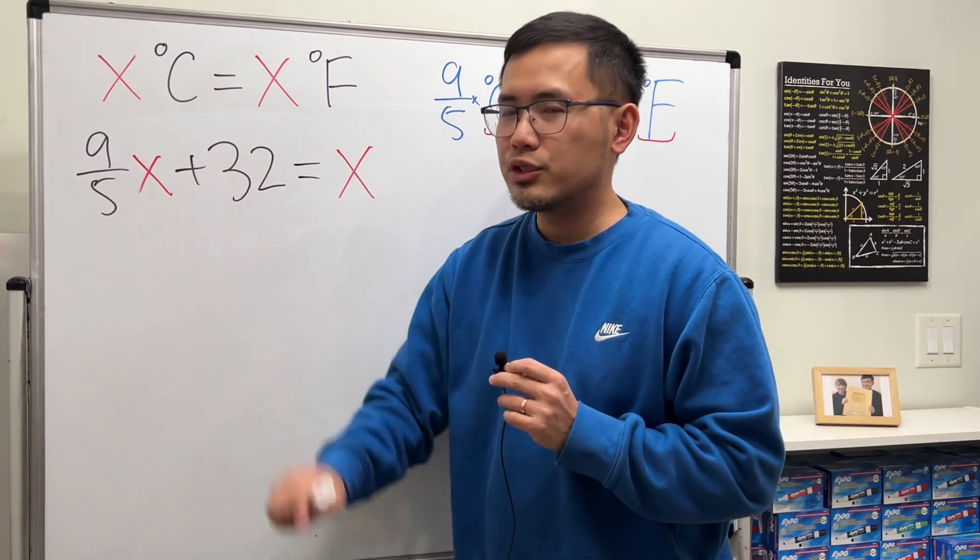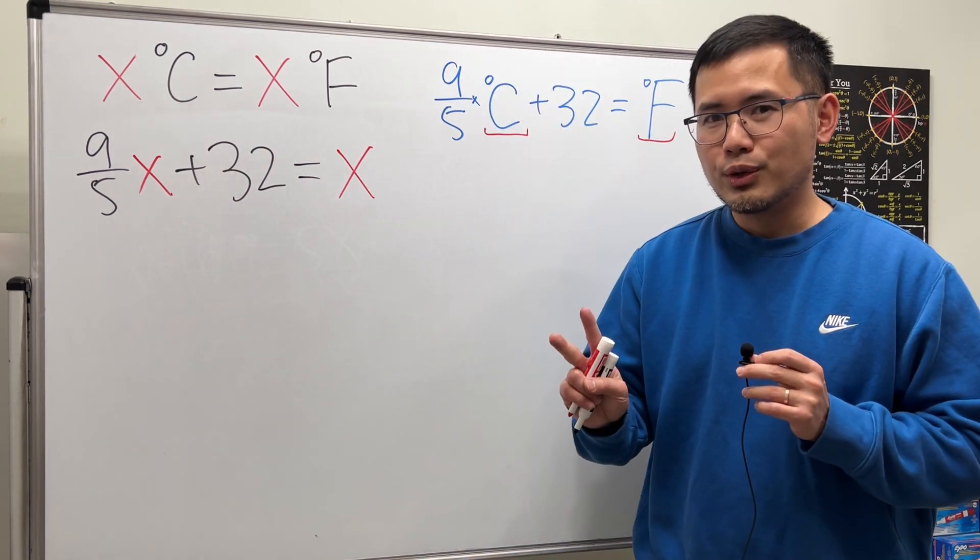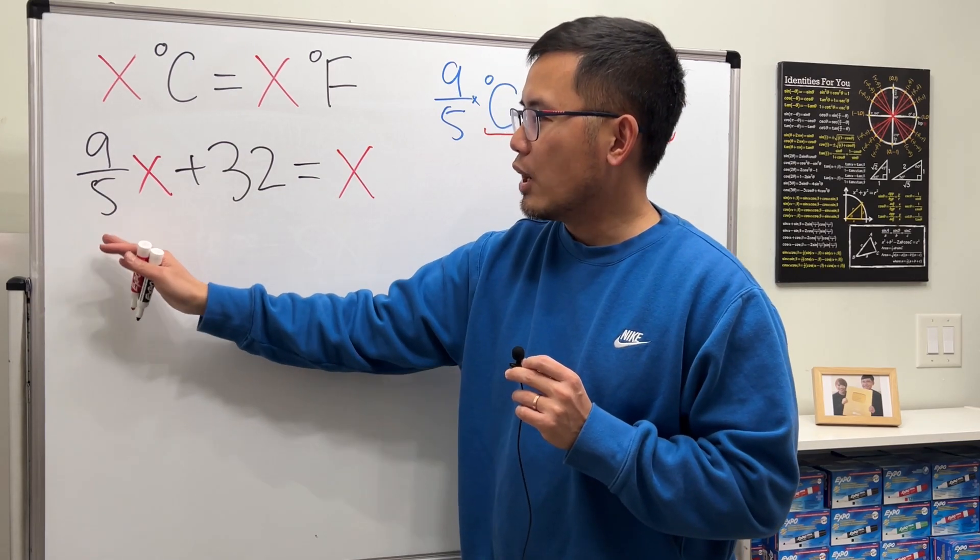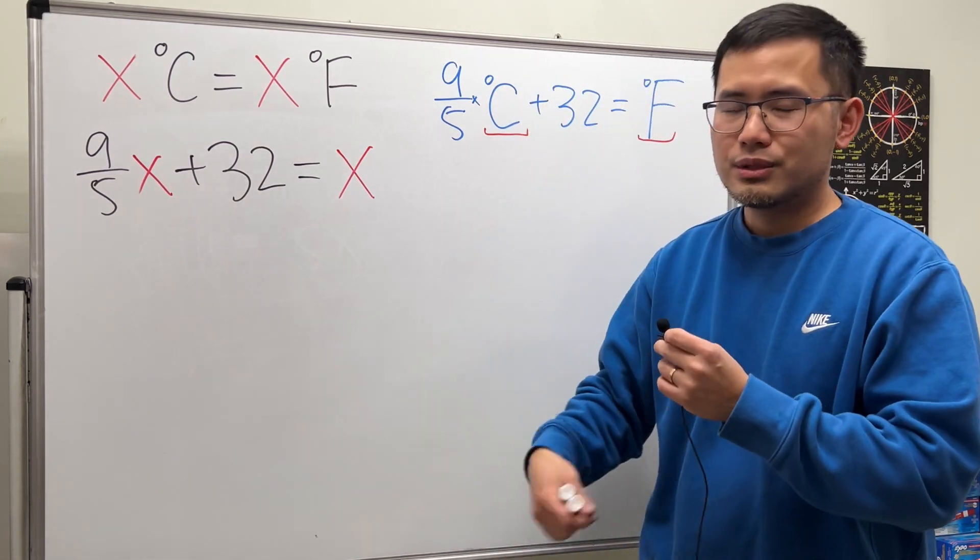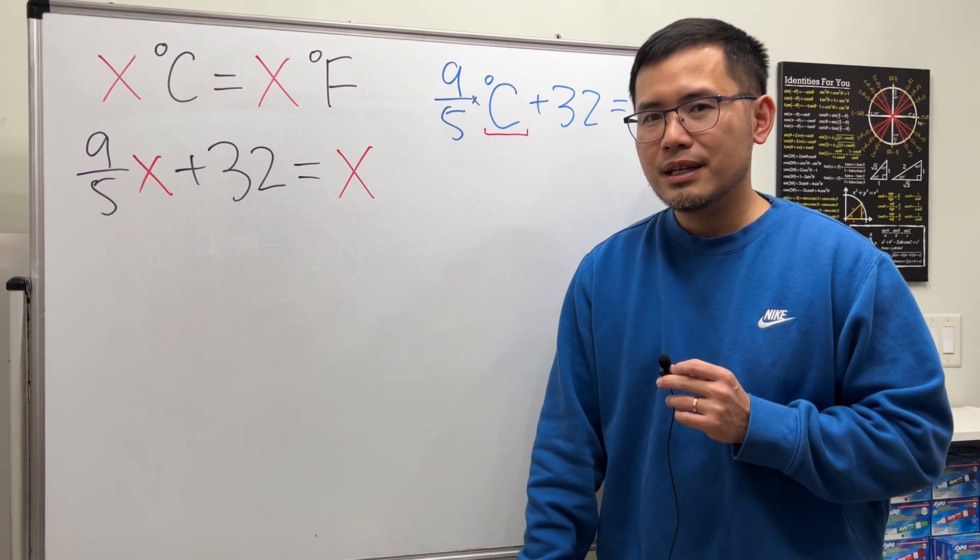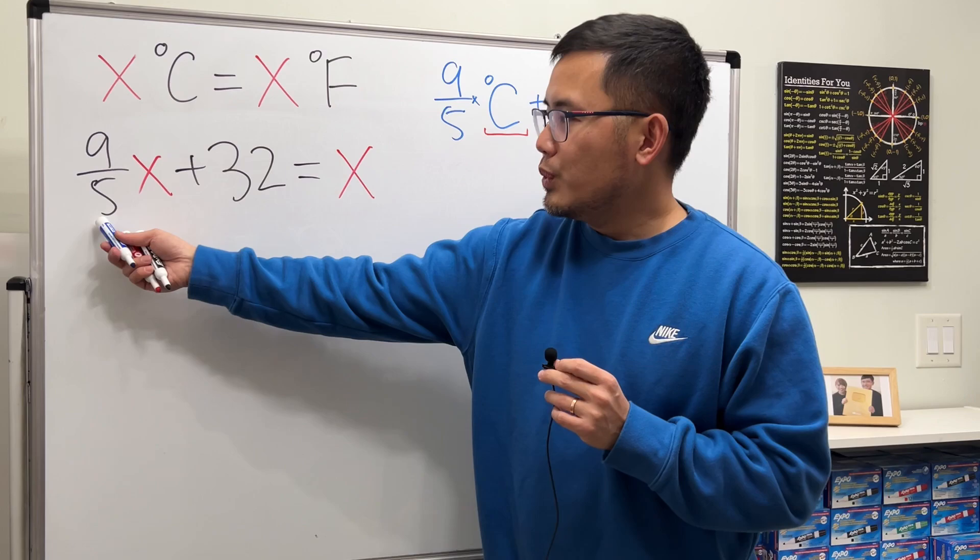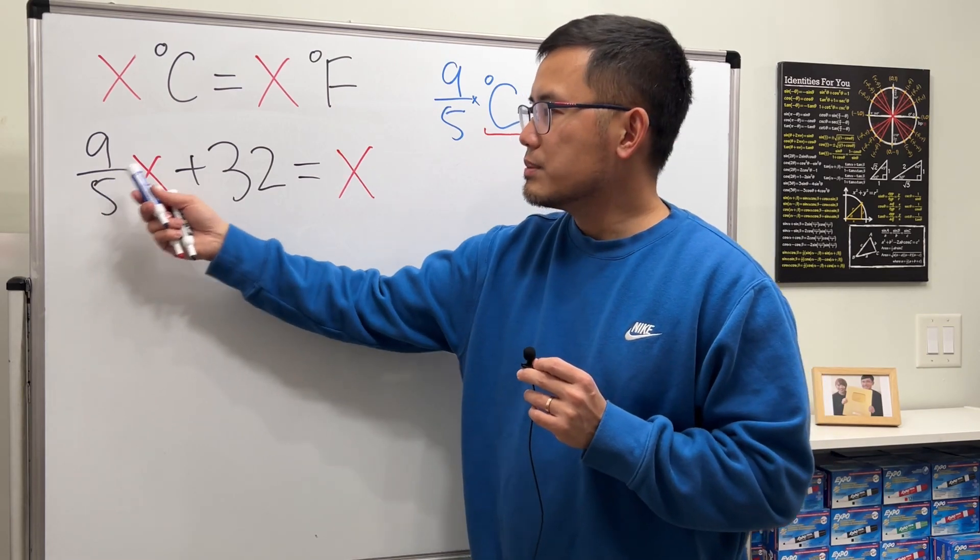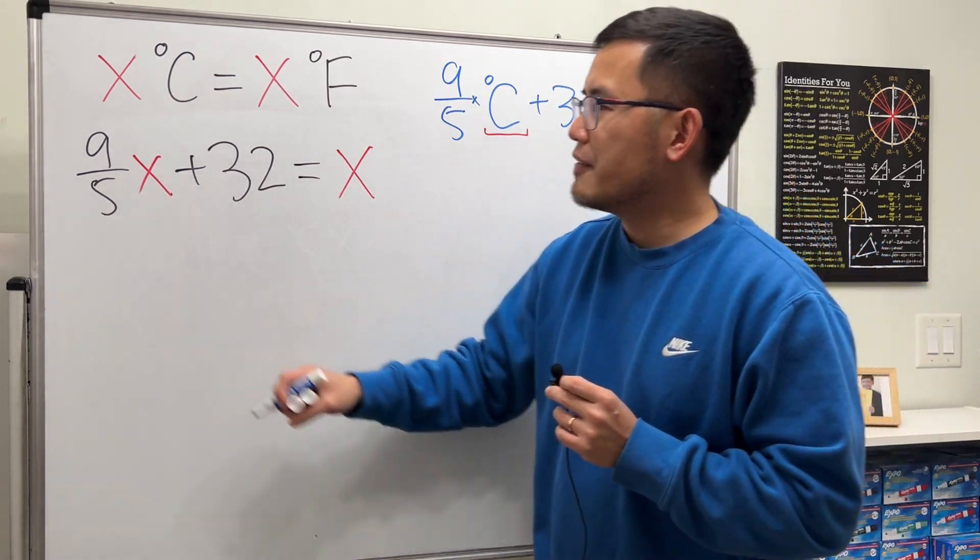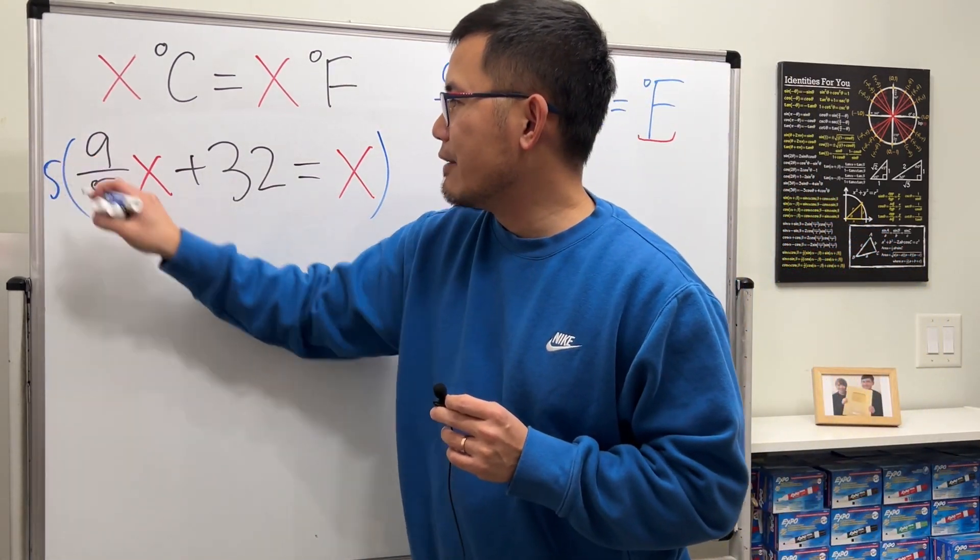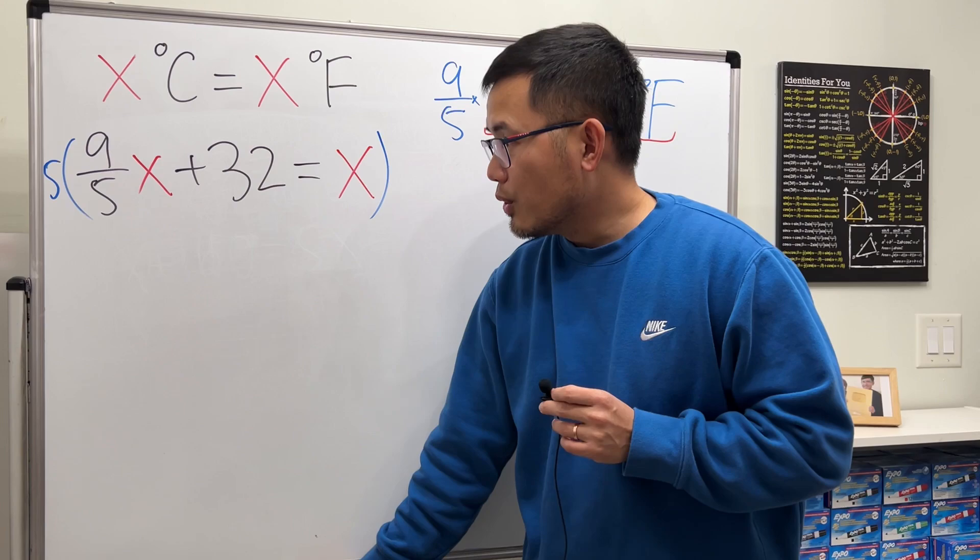But we do have an equation with fractions. So now you have two choices. You can just work with fractions, minus 9 over 5x on both sides, and then just get a common denominator. But an easier way to do this is, here we have the denominator 5. Let's just multiply everybody by 5. So let me just take this and then multiply by 5 right here.